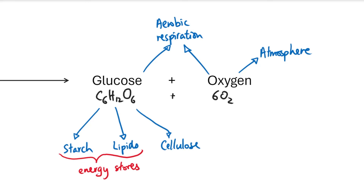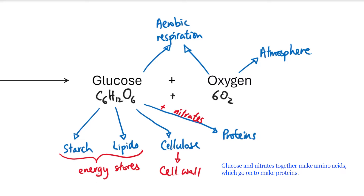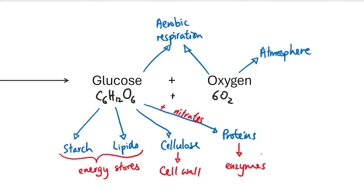Apart from starch and lipids, glucose can also be converted into cellulose, which is again a combination of glucose molecules stuck together, and cellulose is used to make the cell wall. Without cellulose there won't be any cell walls in the plant, so it forms the actual structure of the plant. Finally, glucose can combine with nitrates from the soil to make proteins. Proteins are very important because they form the main structure of all living things, and they can also be turned into enzymes, which are essential in all chemical reactions including photosynthesis. That's why, as you may have learned in the plant diseases chapter, if a plant is lacking in nitrates it will have stunted growth — without nitrates, glucose can't be converted into proteins, so the plant can't form its structure and therefore can't grow.